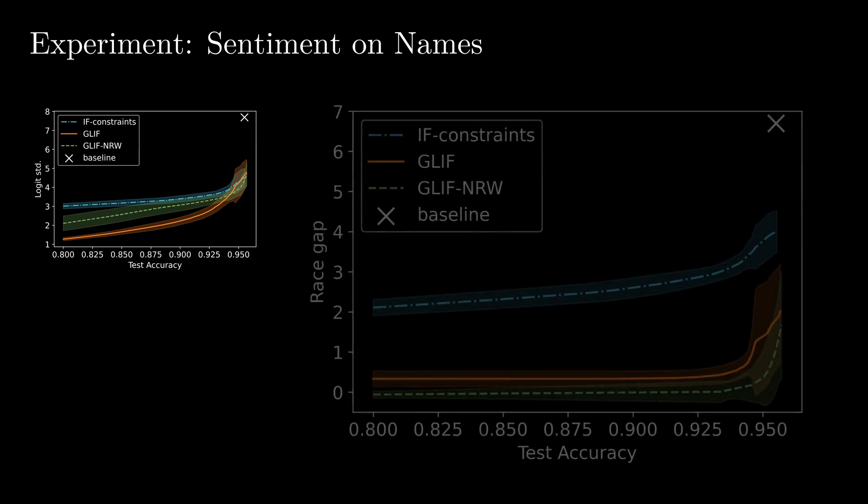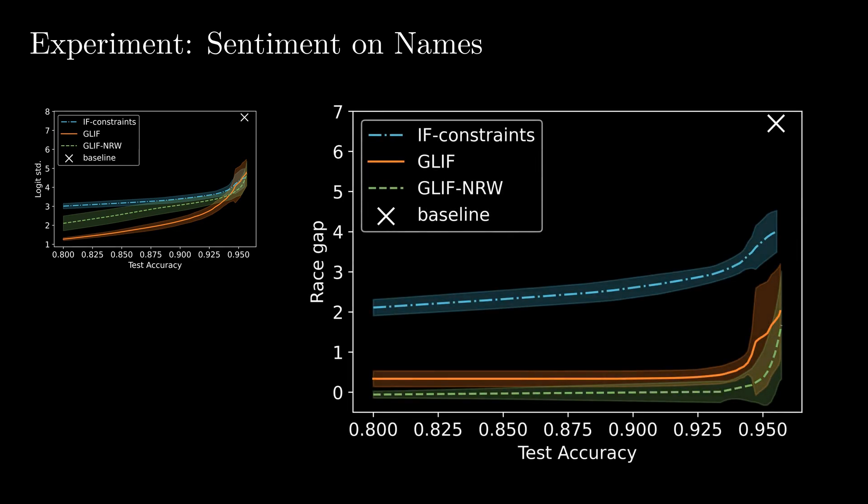In the next plot, we consider the race gap, that is the average difference in scores between names of different ethnic groups. Again, we observe that the baseline model behaves unfairly. All methods improve upon the baseline. Glyph and glyph NRW achieve significantly better performance in terms of fairness and accuracy. In fact, the race gap is almost entirely closed, and notably for glyph NRW, the race gap has even an opposite direction. With a drop of less than 1% test accuracy, we can achieve a reduction of the race gap by a factor of 50.